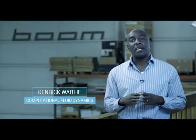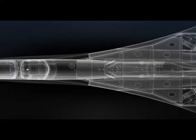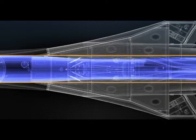First is a concept called area ruling, a dynamically shaped fuselage that minimizes cross-sectional area with a gentle tapering in the aft cabin. This minimizes disturbances to the surrounding air, reducing drag.